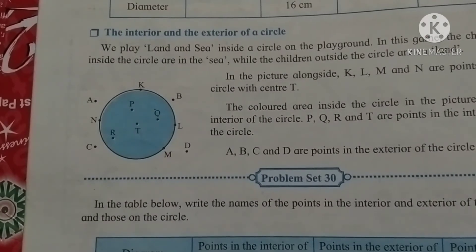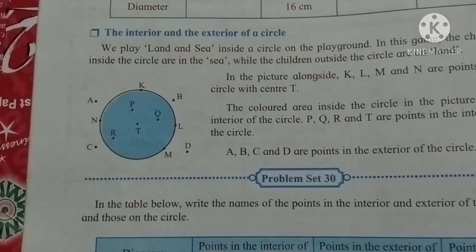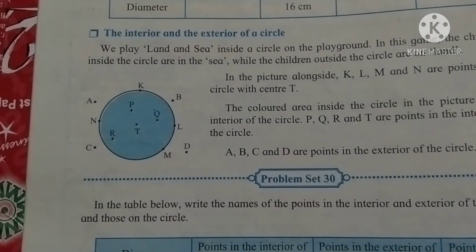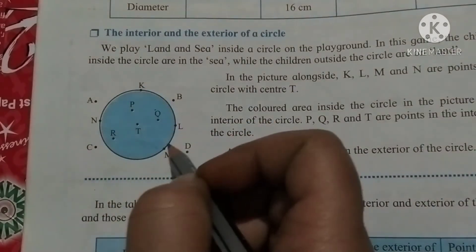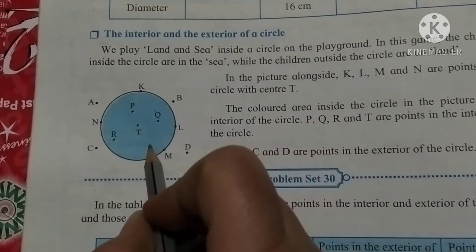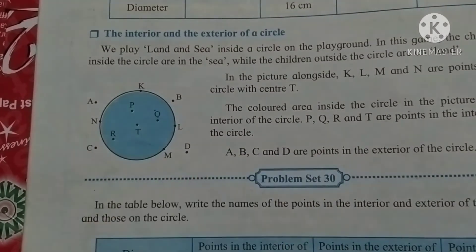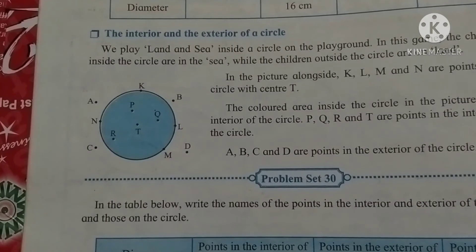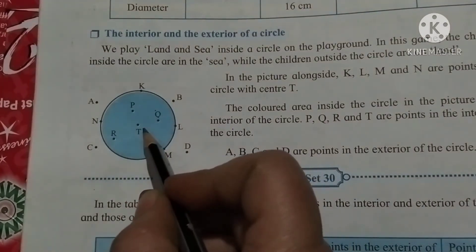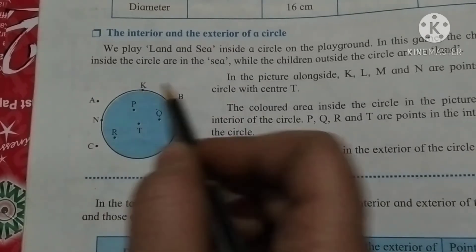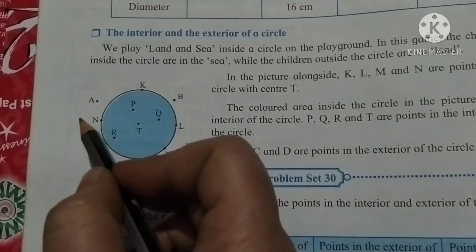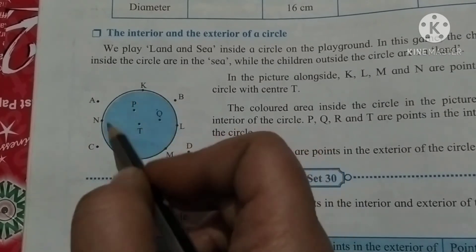The next part is the interior and the exterior of the circle. See here, one circle is there and there are some points inside the circle and outside the circle also. Now T is the center. If we observe the points, K, L, M, N are the points on the circle.